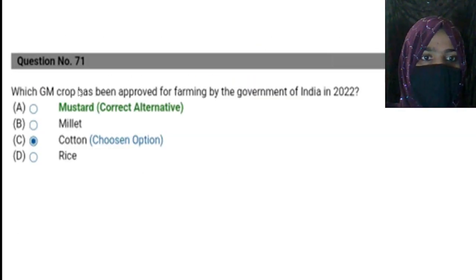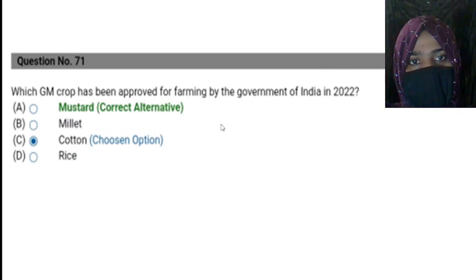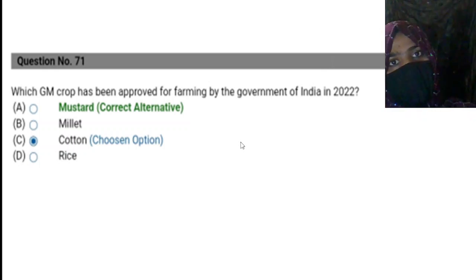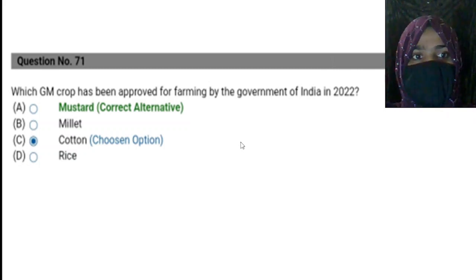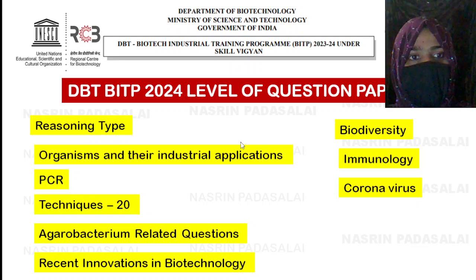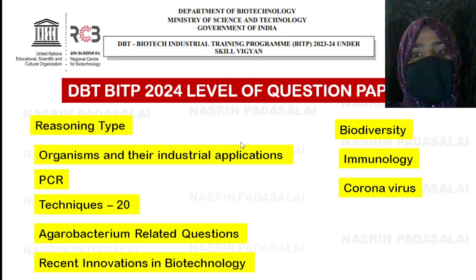Recent innovations in biotechnology are also tested. Last year a question was asked: which GM crop was approved by the Government of India in 2022? The correct answer is mustard. Sometimes they ask which institute created a particular GM crop, what gene was incorporated, or details about the procedure. Study completely about genetically modified mustard — definitely one question will be asked from this topic this year.